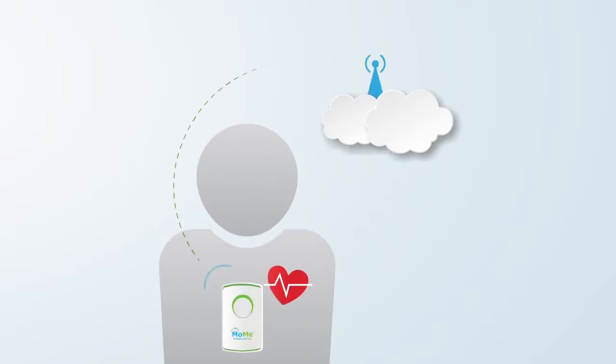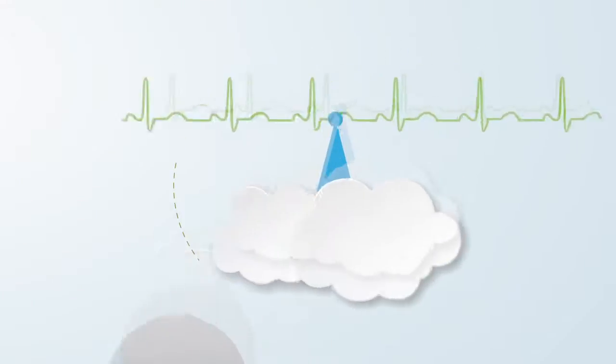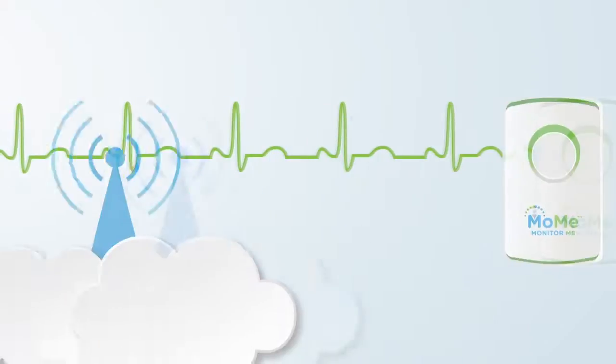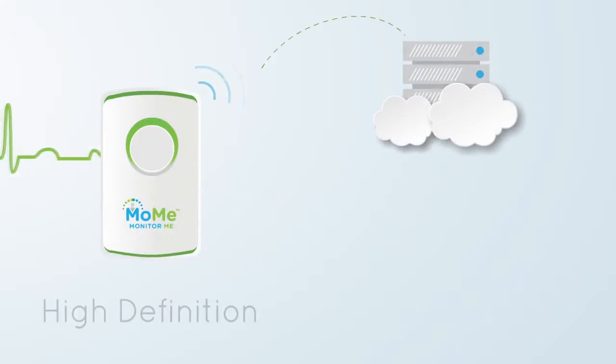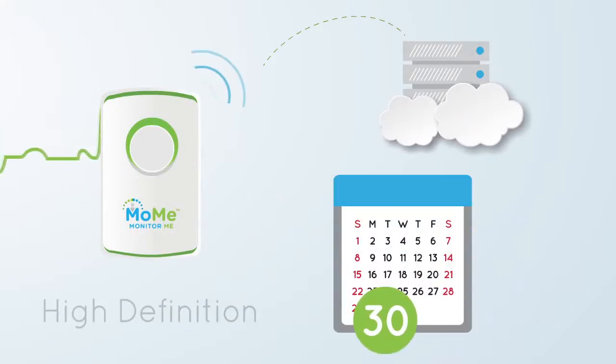The MOMI device continuously transmits a signal of the patient's rhythm through the cellular network, while retaining a high-definition copy on the device for 30 days.